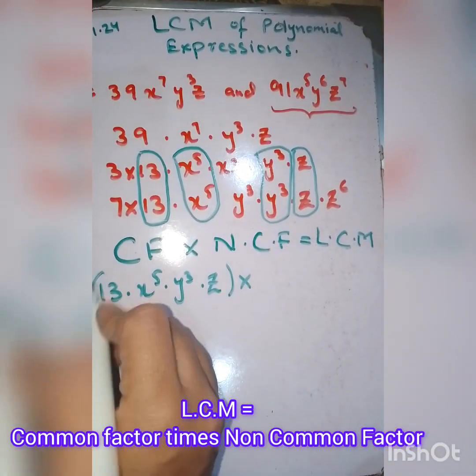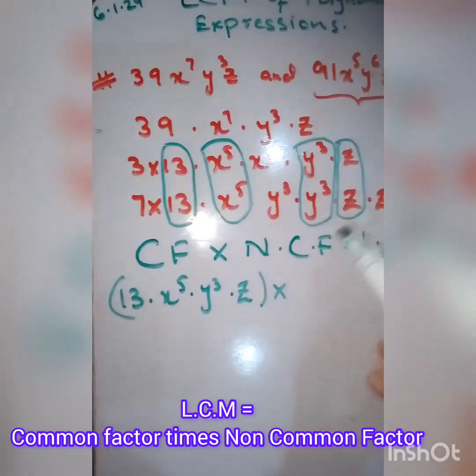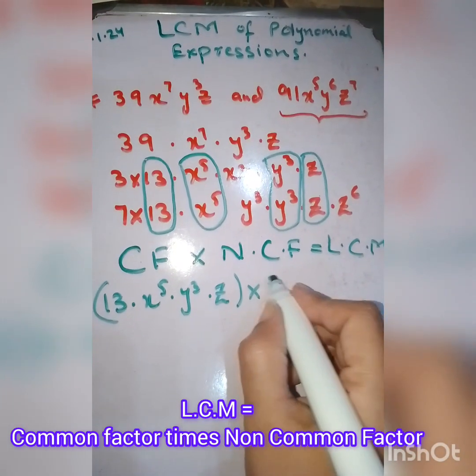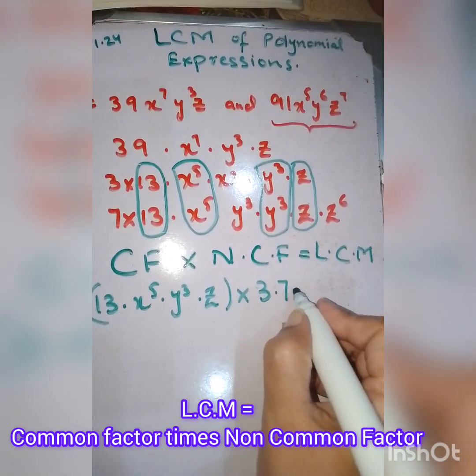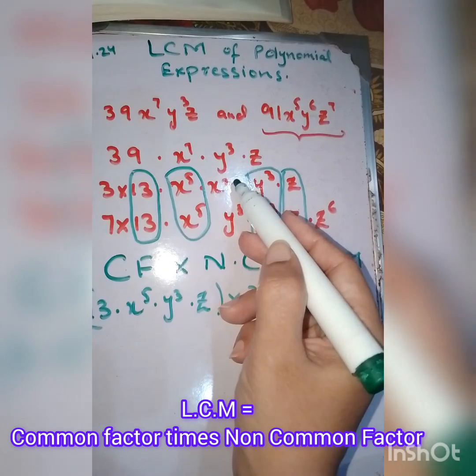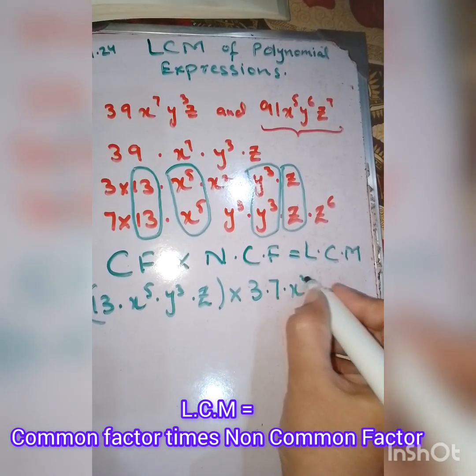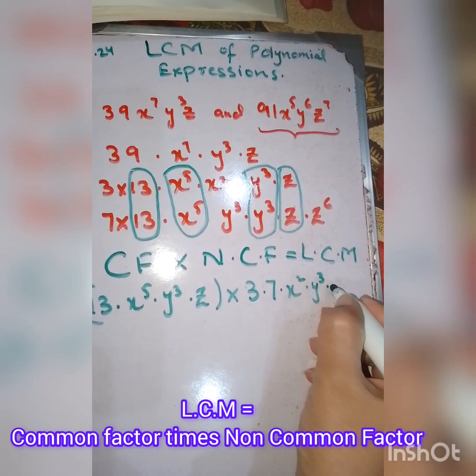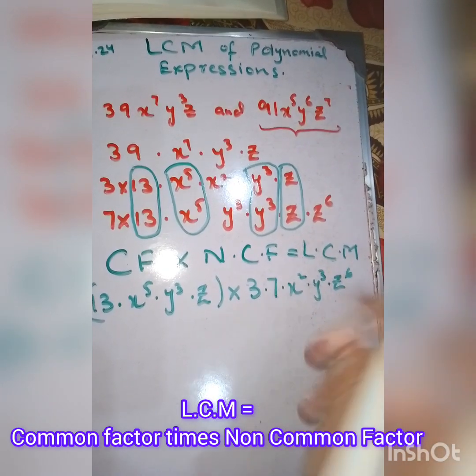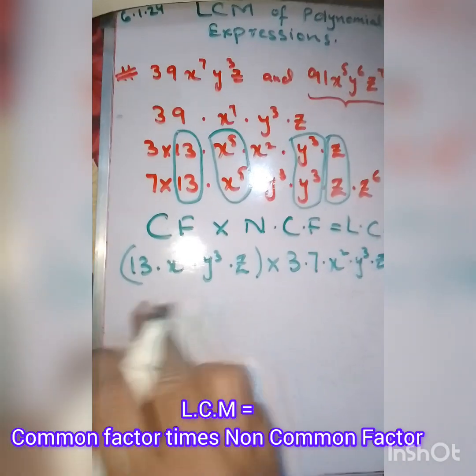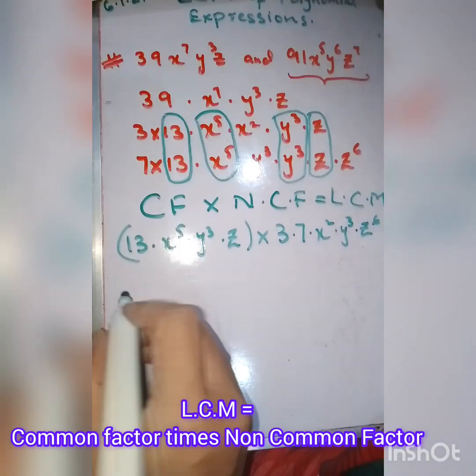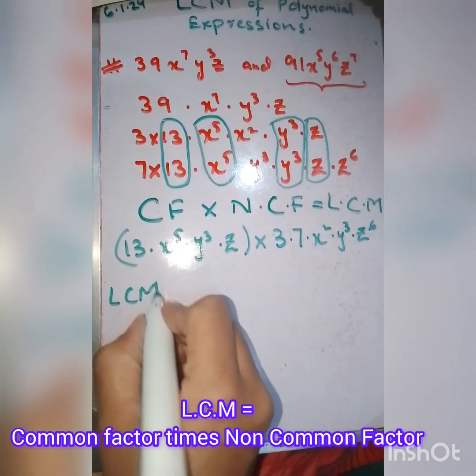Now multiply with the non-common factors. All the remaining ones are non-common factors. We will write them without hesitation: 3, 7, x^2, y^3, and z^6. These are the non-common factors.